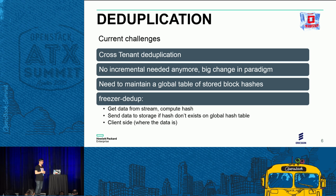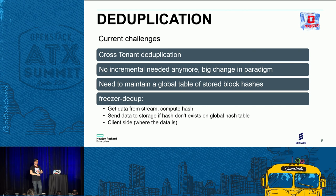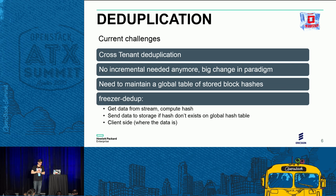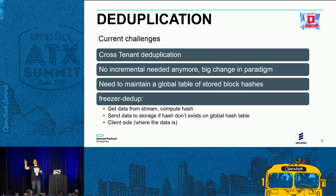We need to maintain a global table of hashes with indexes, so each block of data belonging to every tenant needs to be indexed with its hashes. We need to keep and query that table very fast. We are likely to introduce a new component called the Freezer DeDup. The basic workflow is that it gets data from a stream, computes the hashes, and sends the data to storage only if the hash doesn't already match one in the global hash table. This should run where your data is, providing bandwidth efficiency.